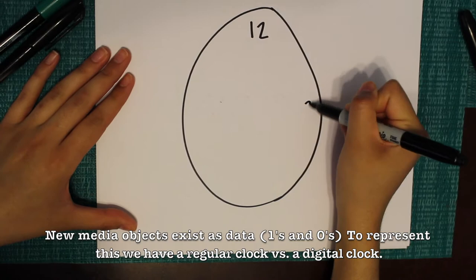New media objects exist as data, such as ones and zeros. To represent this, we have a regular clock versus a digital clock.